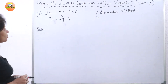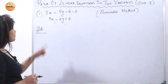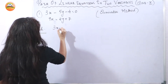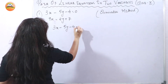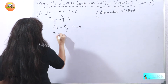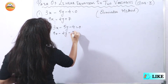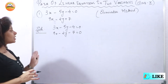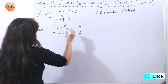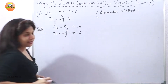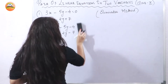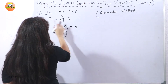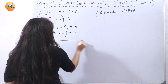The first equation given is 3x minus 5y minus 4 equals 0, and the second equation is 9x equals 2y plus 7. We rewrite these as 3x minus 5y minus 4 equals 0 and 9x minus 2y minus 7 equals 0, putting everything on the left-hand side. Then keeping constants on the right-hand side, we rewrite: 3x minus 5y equals 4, and 9x minus 2y equals 7.